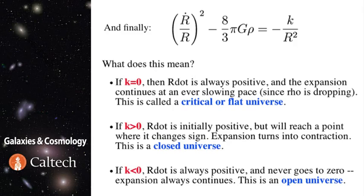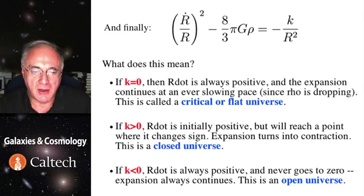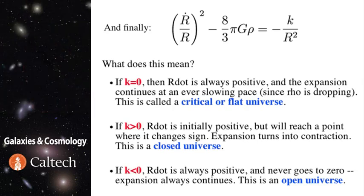If curvature constant is greater than zero, then initially r dot will be positive, and that means the universe will be expanding. But then, at some point, we'll flip the sign and start contracting. So that's the closed universe.